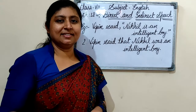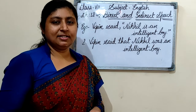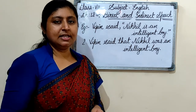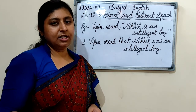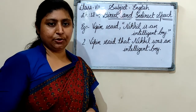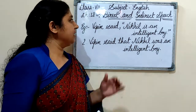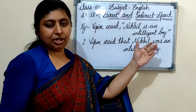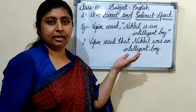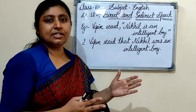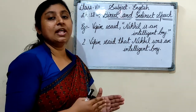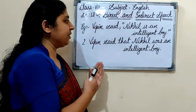Welcome students. Today I am going to start a new chapter for class 7 English — Chapter number 12: Direct and Indirect Speech. So in this chapter we will see about direct speech and indirect speech, what it is. You will understand direct and indirect speech with an example which is written in this book.